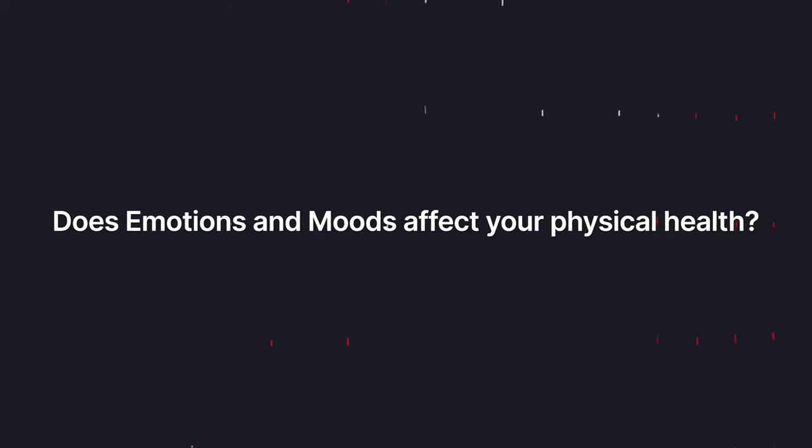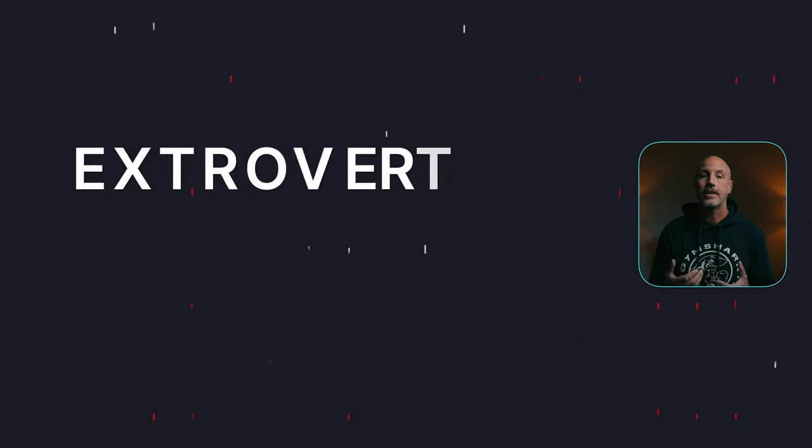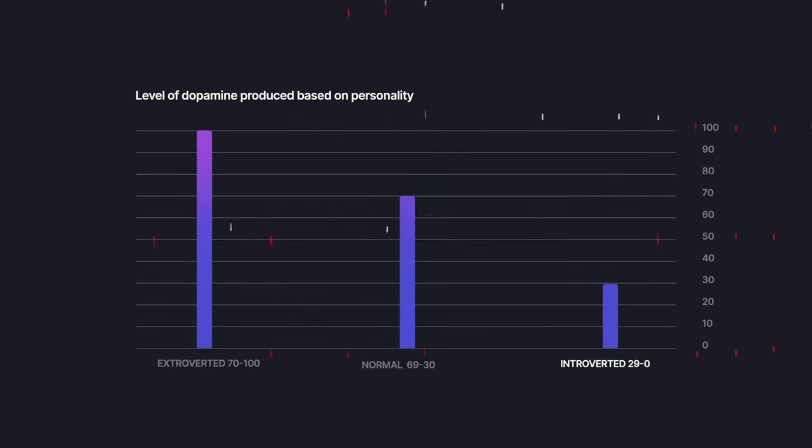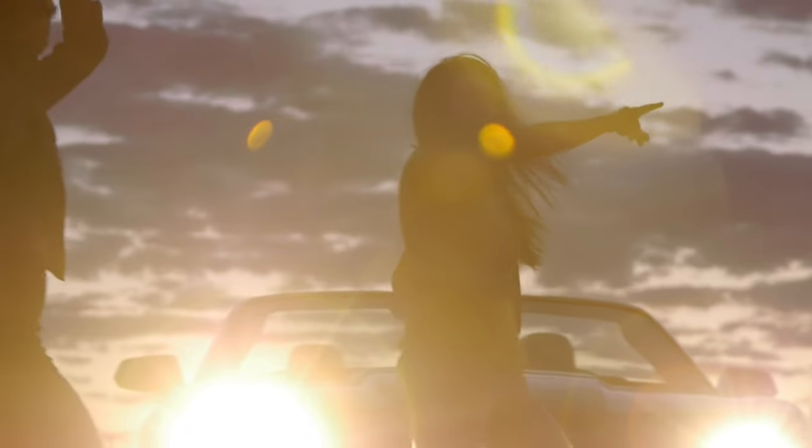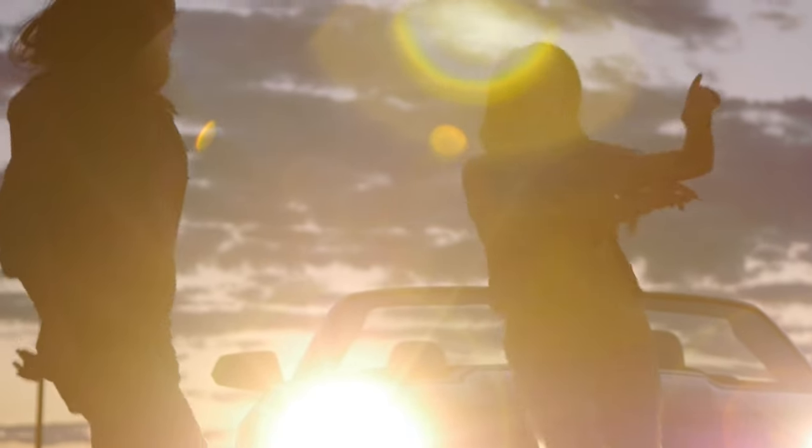Do emotions and moods affect your physical health? Extroverts are the happiest people and they also live longer than introverts. The reason is that introverts produce less dopamine in their brain. It is fairly easy to identify an extrovert — you see it by how much a person talks, by the movement of their hands, and their general energy output.